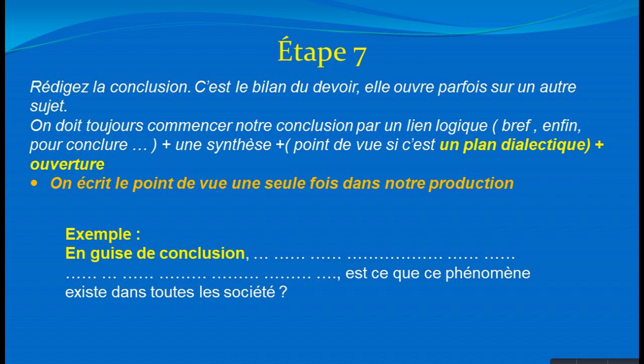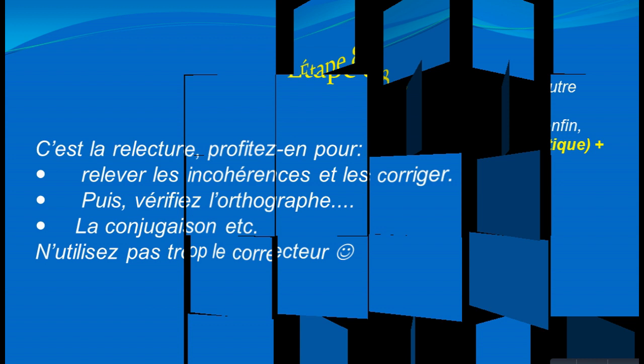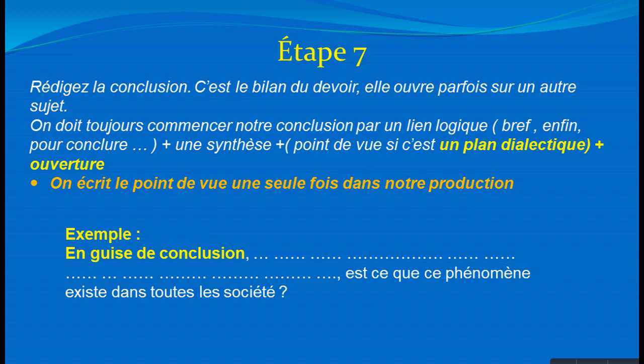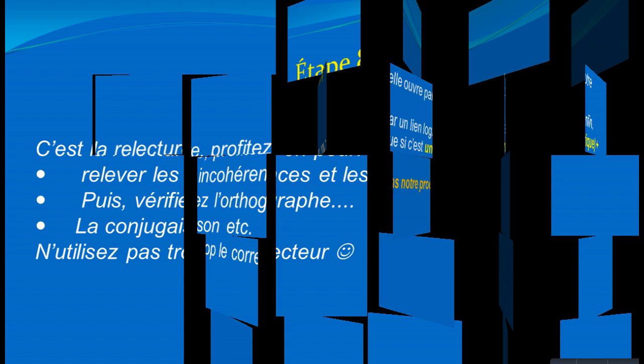Étape numéro 7 : on rédige la conclusion. La conclusion commence par un lien logique — par exemple, en guise de conclusion, enfin, finalement — pour que le correcteur comprenne qu'il s'agit bien de la conclusion. Si c'est un plan dialectique, on ajoute le point de vue personnel. Si c'est un plan simple, vous avez déjà cité votre point de vue et vous ne le refaites pas une deuxième fois. On peut également ajouter une ouverture sous forme de question pour élargir le sujet.